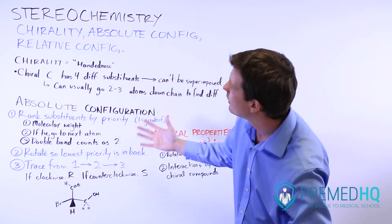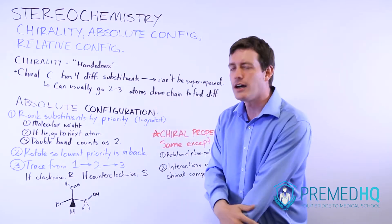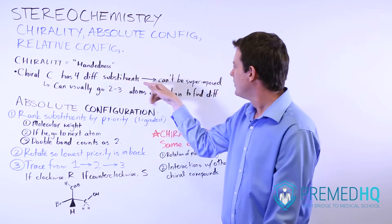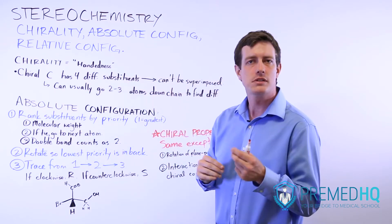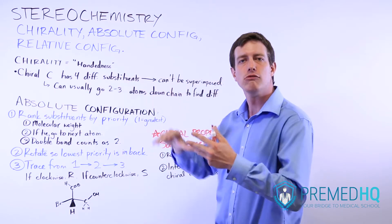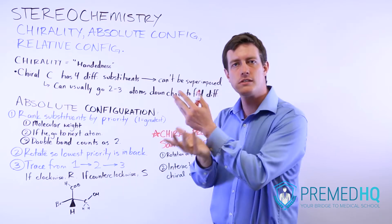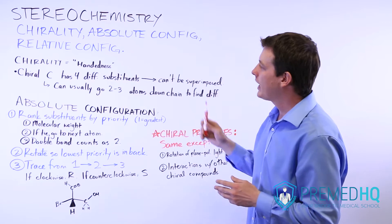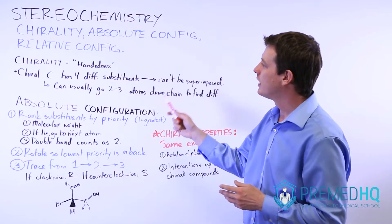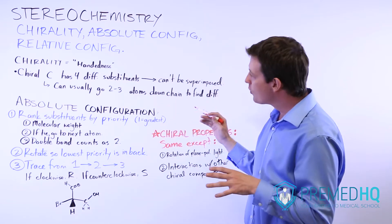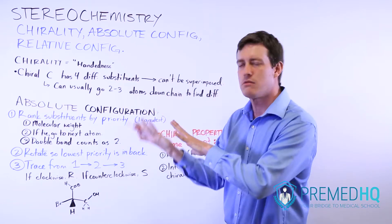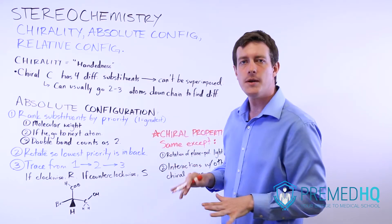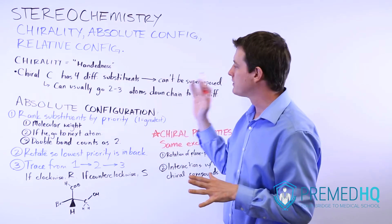And that's how chiral compounds work. A chiral compound has to have four different substituents. These four different substituents can all rotate around their bonds and pivot in space. But what can't happen with a chiral compound is that there's no way you can arrange or rotate them so that they perfectly overlap.